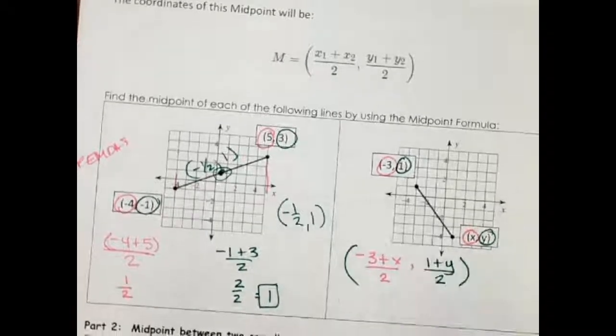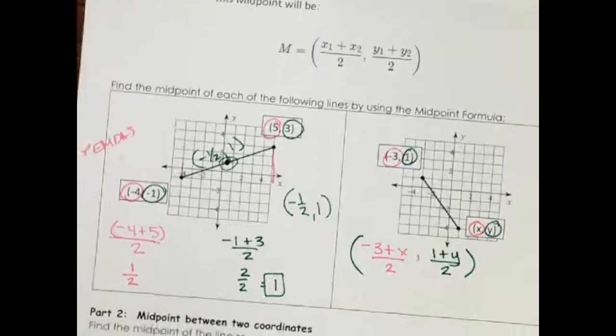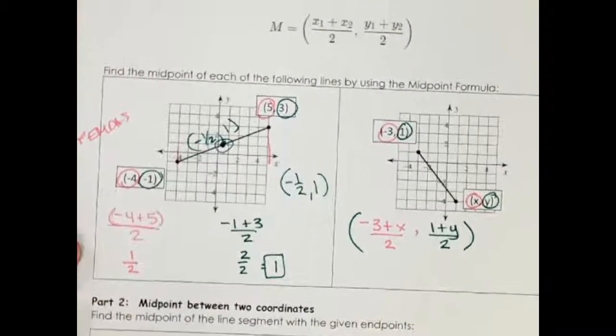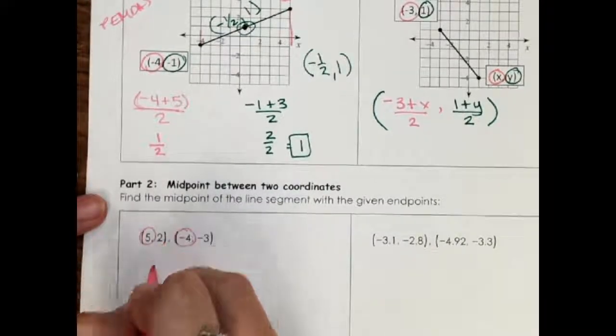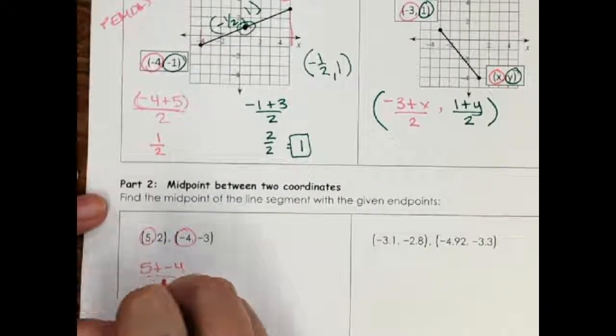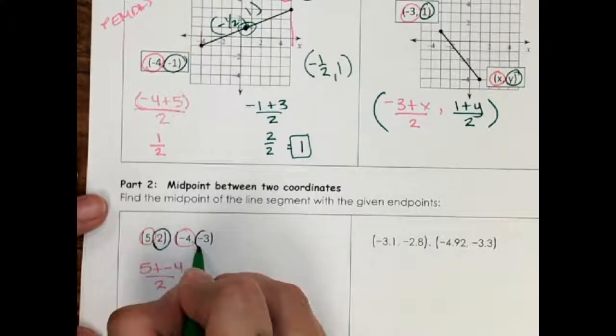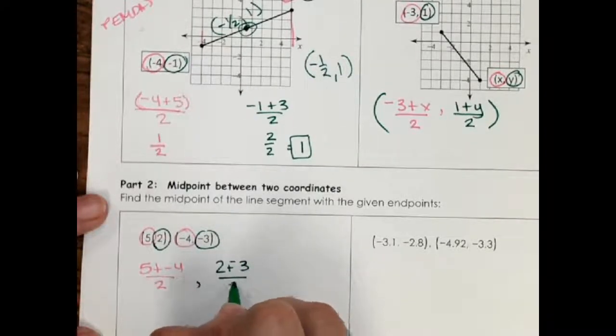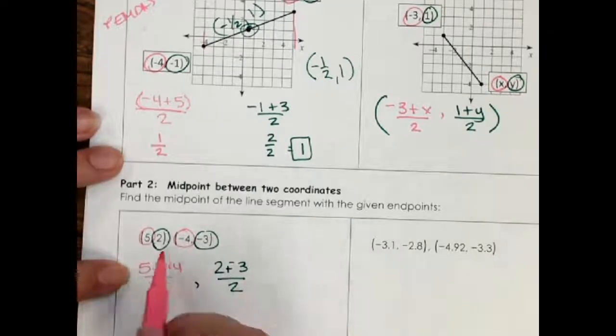There's nothing else I can simplify, I just leave it like that. We can also have a where we don't have the graph, so we still use the same formula and we have the formula still at the top of the page there. So it's the x's, I add them together over two, and then I'm going to do the same thing with the y parts, add them together over two.